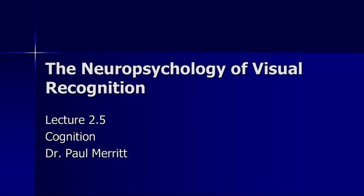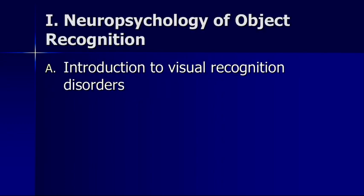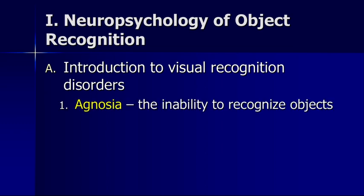We're going to start with an introduction to different kinds of visual object recognition disorders. We'll then talk about agnosia and different types of agnosia, then prosopagnosia, then a disorder called topographic agnosia, and then the implications of all of this, and finally global versus local processing in the brain. Agnosia is the inability to recognize objects — individuals with agnosia can no longer recognize objects using their visual system.